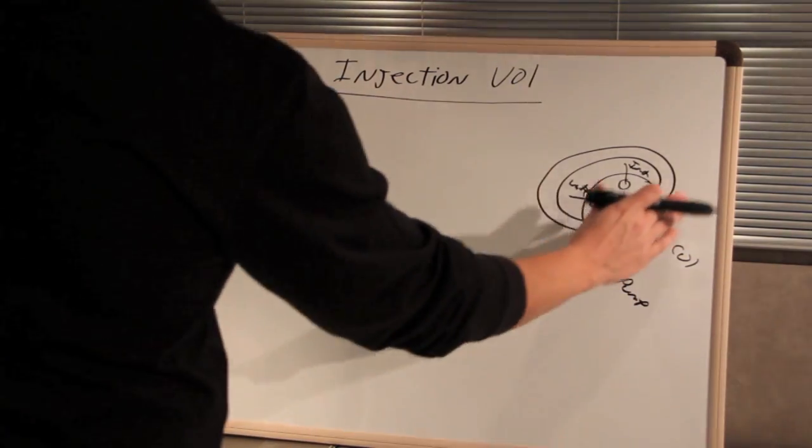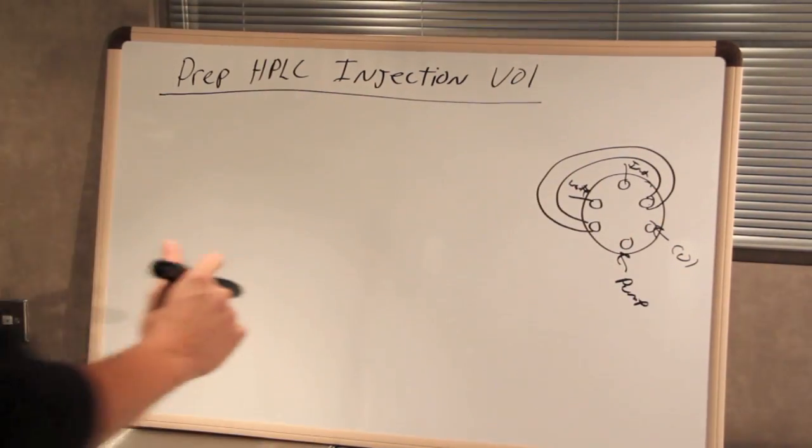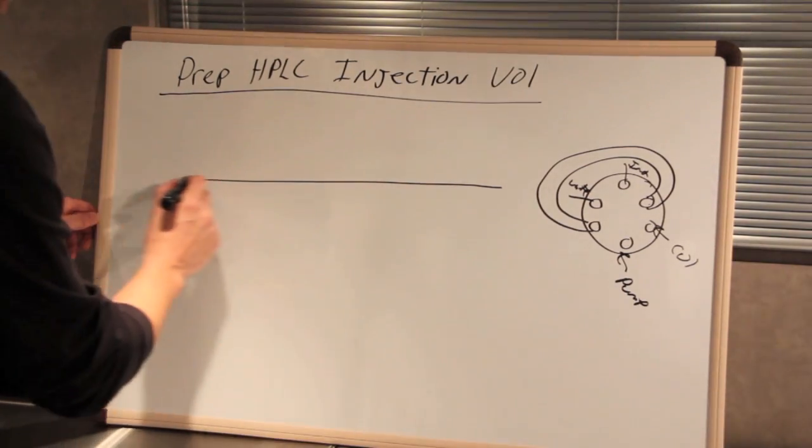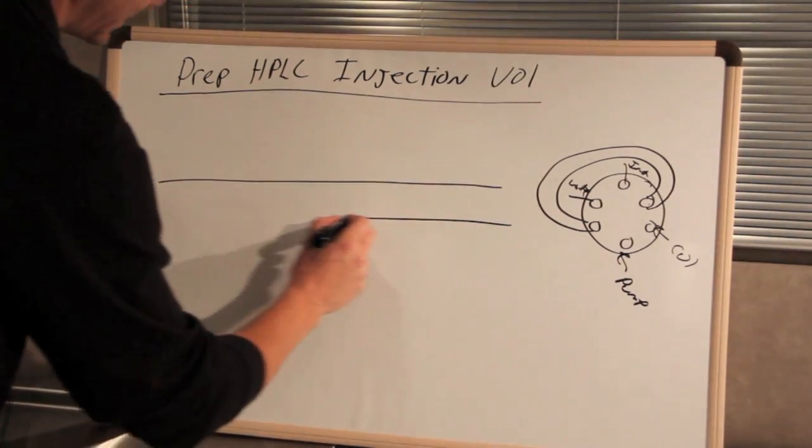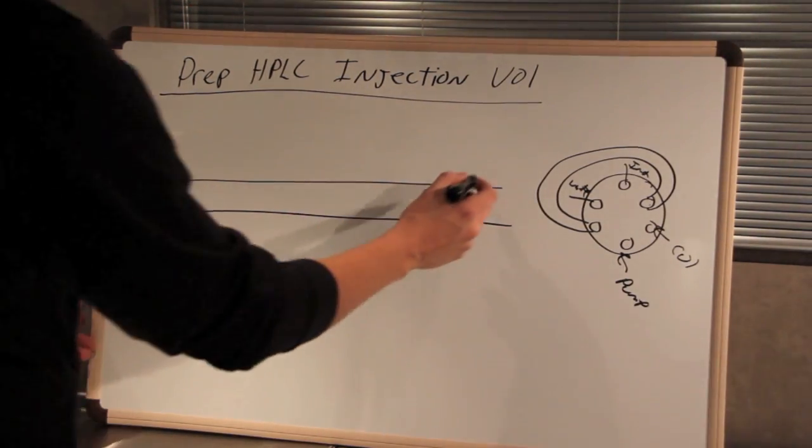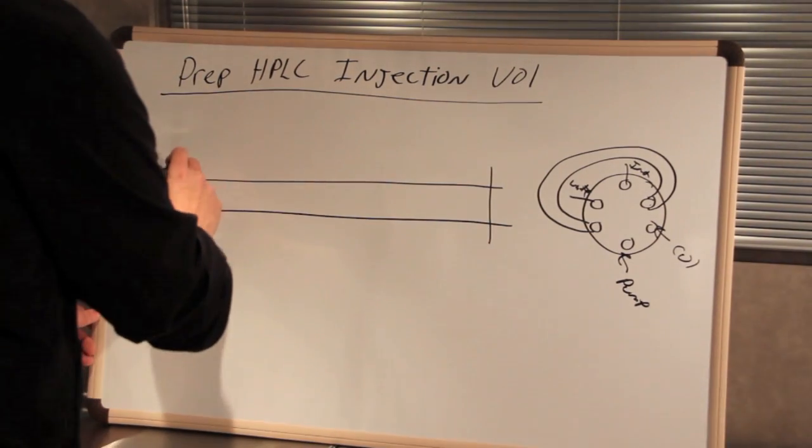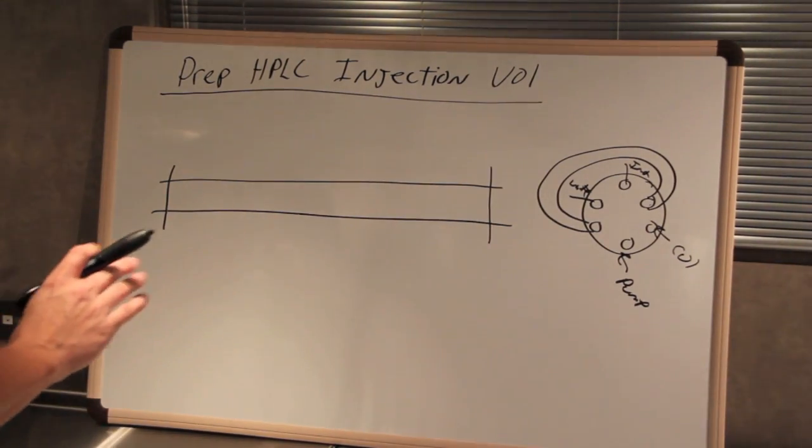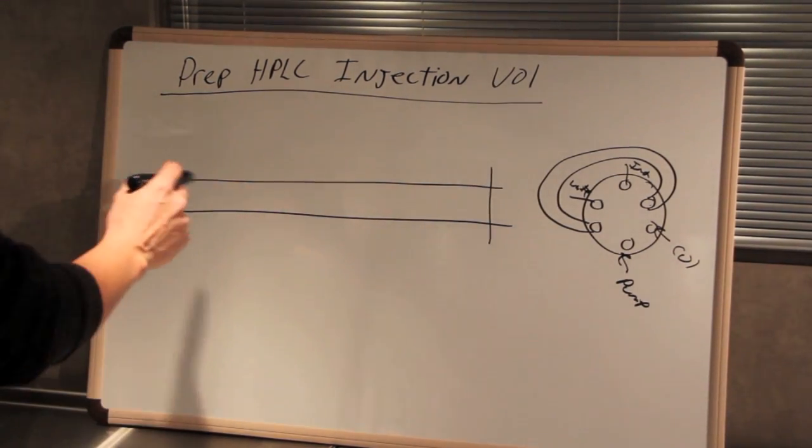So what we're going to do is really look at the injection loop. I'm going to draw that injection loop out as a straight tube, and then I'm going to draw vertical lines to represent the injection volume, or the total injection amount.